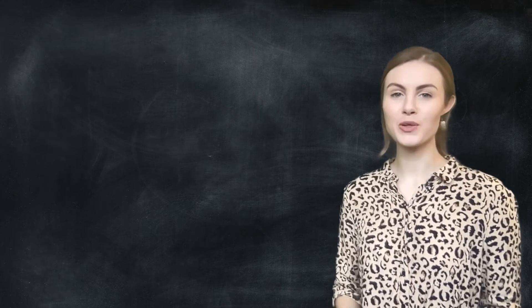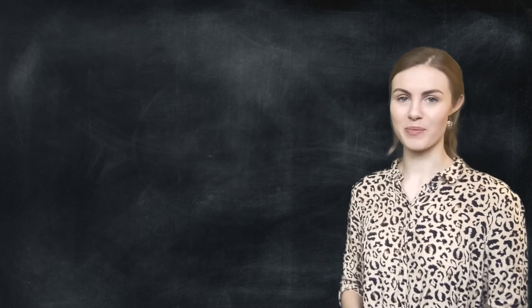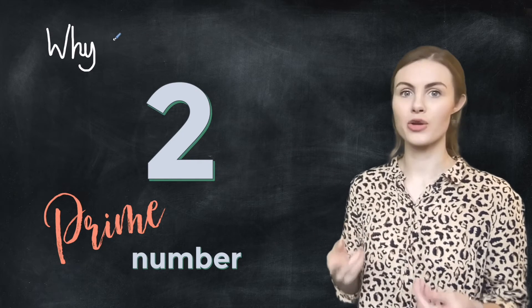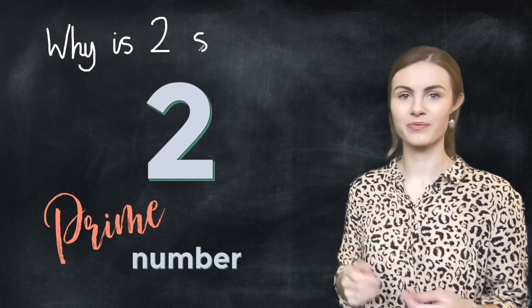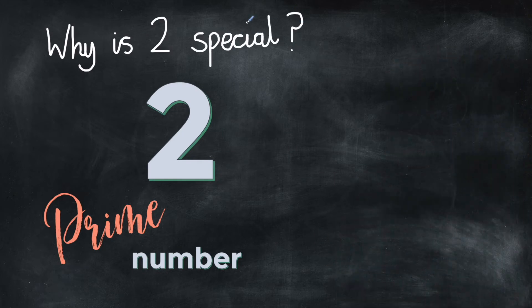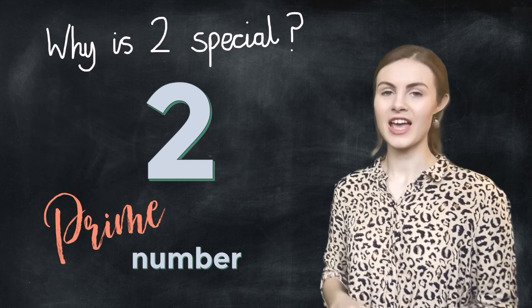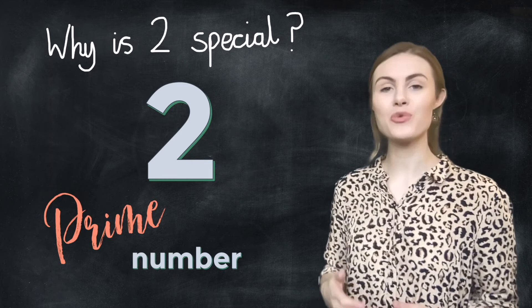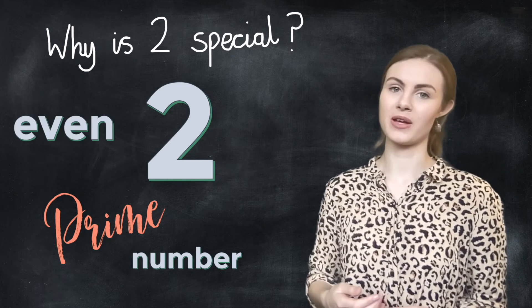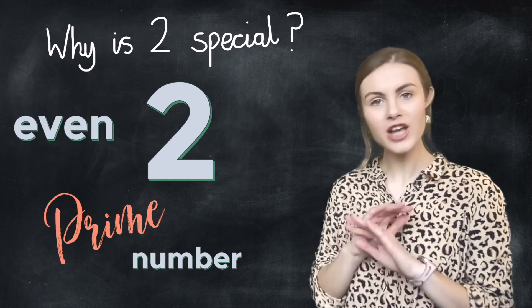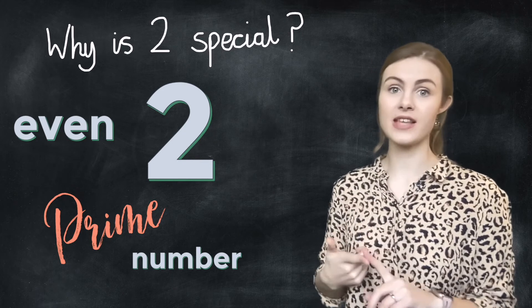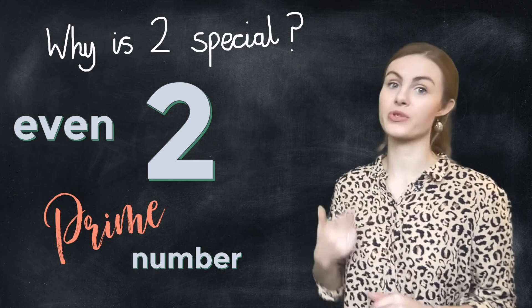Now I'm going to show you the most unusual prime number — see if you can spot what makes this number special. The number two is a prime number, and it's also the only even prime number, because every other even number is divisible by at least one and itself, but also the number two.